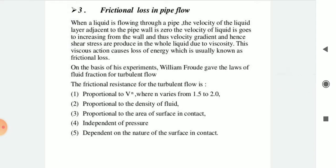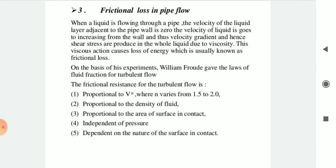Frictional loss in pipe flow: when a liquid flows through a pipe, the velocity of the liquid layer adjacent to the pipe wall is zero. The velocity of liquid increases from the wall, thus a velocity gradient and shear stress are produced throughout the liquid due to viscosity. This viscous action causes loss of energy, known as frictional loss. On the basis of his experiments, William Froude gave the law of fluid friction for turbulent flow: the frictional resistance is proportional to V^n (where n varies from 1.5 to 2.0), proportional to the density of the fluid, proportional to the area of surface in contact, independent of pressure, and dependent on the nature of the surface in contact.